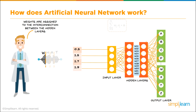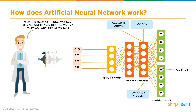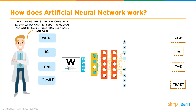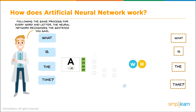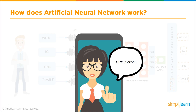The output of the transfer function is fed as input to the activation function, so the output from one hidden layer becomes the input to the next. An acoustic model contains the statistical representation of each distinct sound that makes a word, and as these layers separate sounds out, they start learning the different models for different letters. A lexicon contains data for different pronunciations of every word, and we end up identifying the different letters. Following the same process for every word and letter, the neural network recognizes the full sentence — 'What is the time?' — and that way Siri can look up the time and read it back to you.